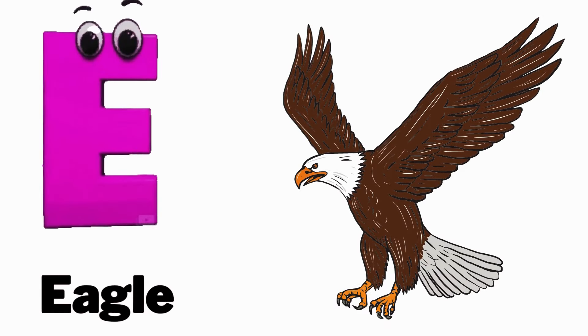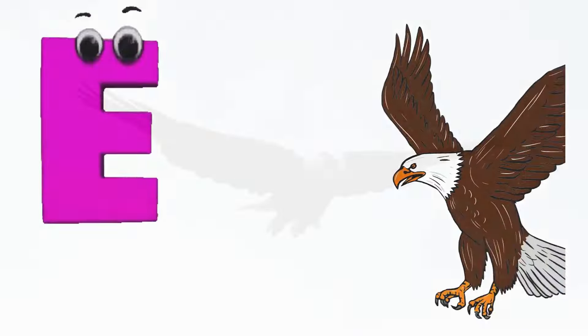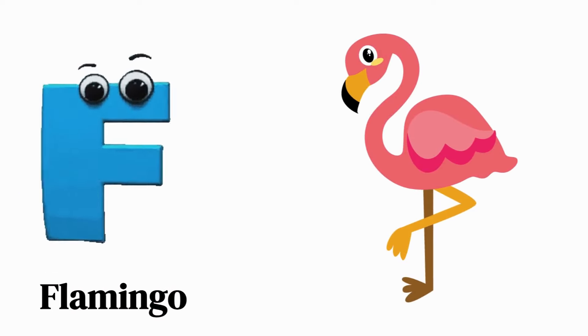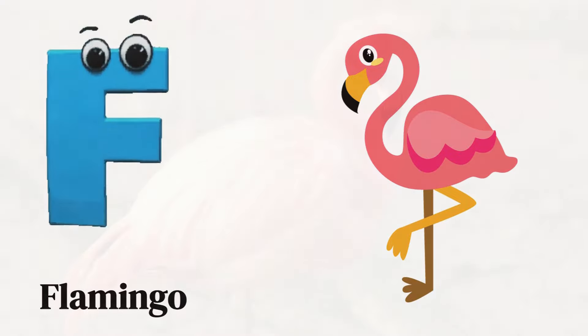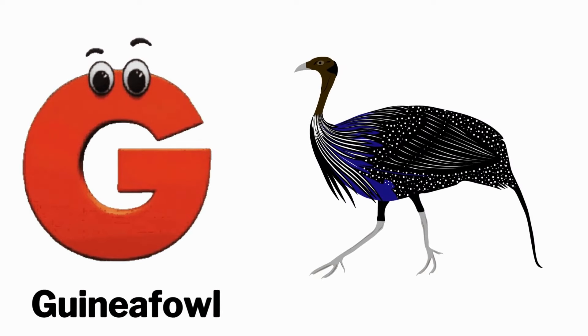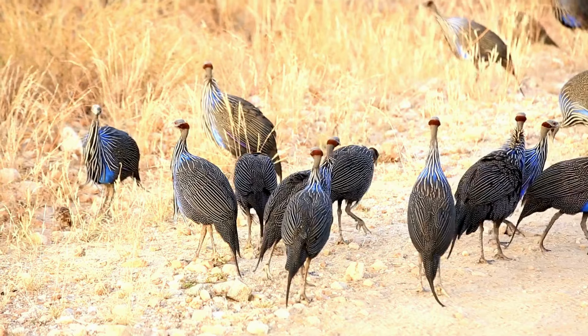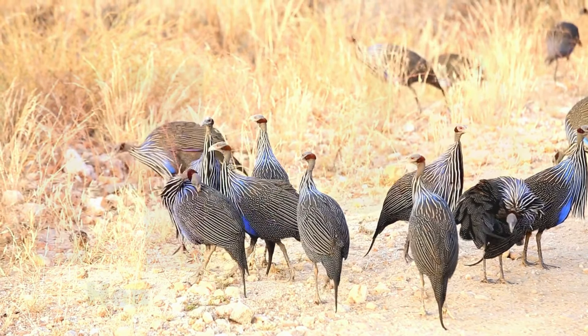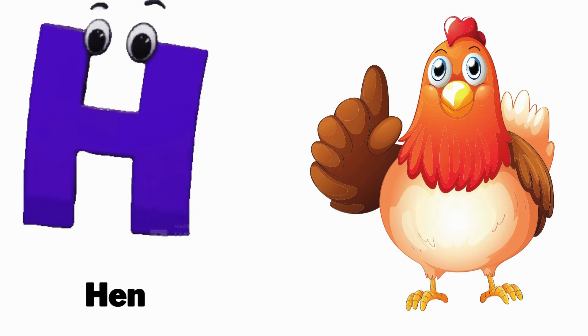E is for eagle, eh eh eagle. F is for flamingo, fuh fuh flamingo. G is for guinea fowl, gah gah guinea fowl. H is for hen, huh huh hen.